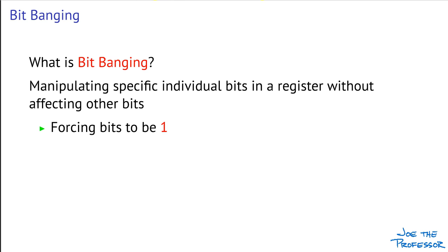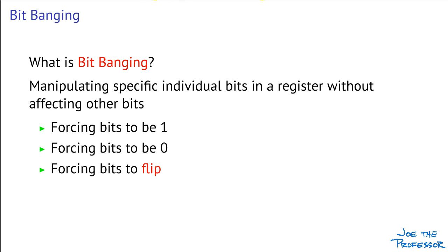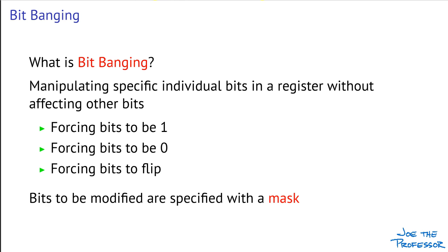You may want to force certain bits to have a value of 1 while leaving other bits at their original value, or you may want to force certain bits to have a value of 0 while leaving other bits at their original value. And sometimes you don't care about the actual value of a bit — you just want to flip a 0 to a 1 or 1 to a 0. That's an easy way to blink an LED, for example. An important part of the bit banging concept is how we specify which bits we want to manipulate. We use what's called a mask, which is often a defined constant but can also be a value in a register. The mask needs to have a bit set to 1 in the bit positions corresponding to the bit positions you want to modify, and a 0 in all bit positions that should remain unchanged.